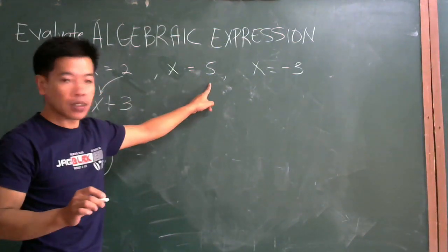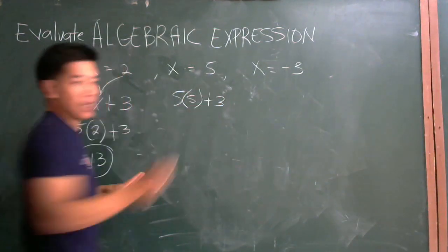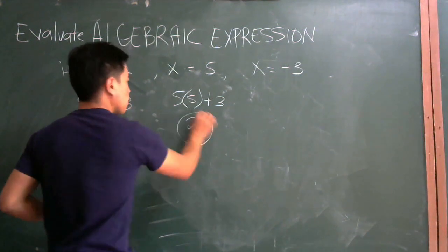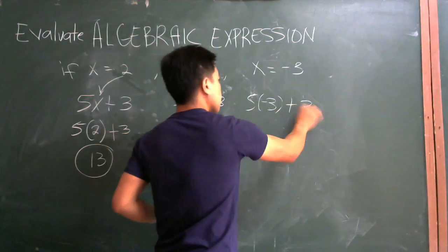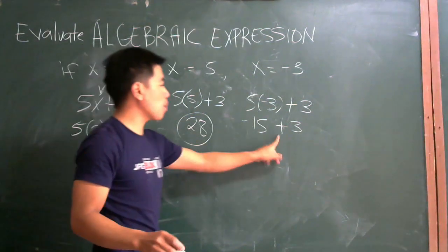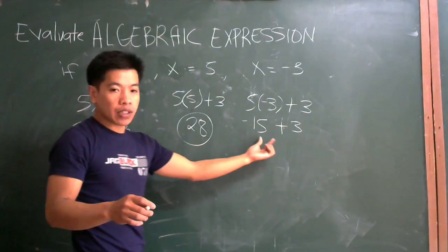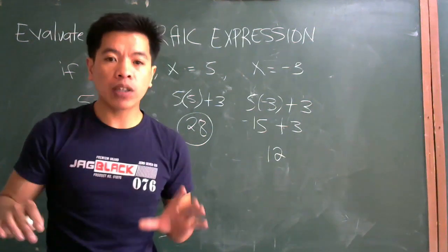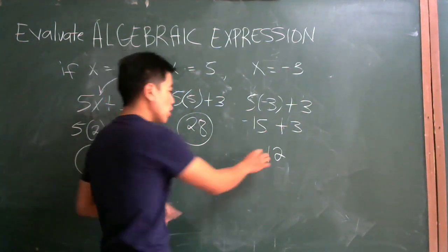How about if X is equal to 5? Just substitute: 5 times 5 plus 3. Five times 5 is 25, plus 3, answer is 28. How about if the value of X is negative 3? So 5 times negative 3 plus 3. Five times negative 3 is negative 15, plus 3. When adding unlike signs, subtract the numbers: 15 minus 3 is 12, and take the sign of the larger number, which is 15 — so the answer is negative 12.